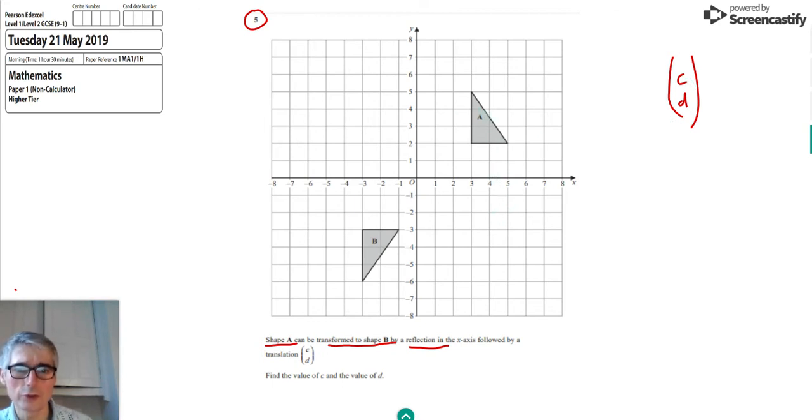So first of all, I'm going to do the reflection in the x-axis. A reflection means that every point on A is taken to the line of reflection and then goes the same distance on the opposite side. We can see this point here goes two squares to the line of reflection in the x-axis, and then we'll go exactly the same distance past. So this point here is reflected to there.